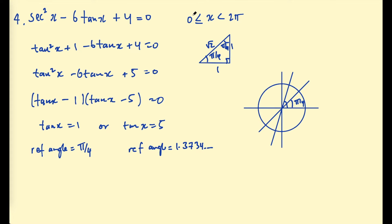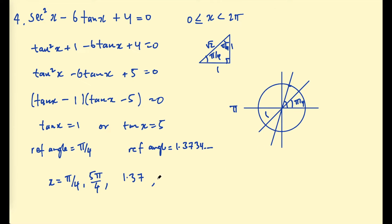Looking at the interval 0 to 2π, we get four solutions. For tan x = 1: x = π/4 and x = π + π/4 = 5π/4. For tan x = 5: x ≈ 1.37 radians (first quadrant) and x ≈ π + 1.37 ≈ 4.51 radians (third quadrant). Those are your final solutions for this example.